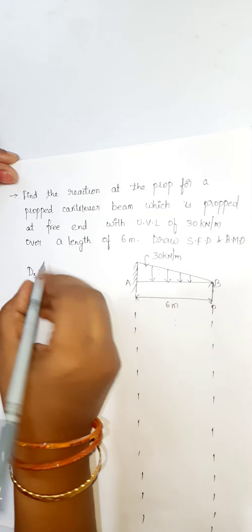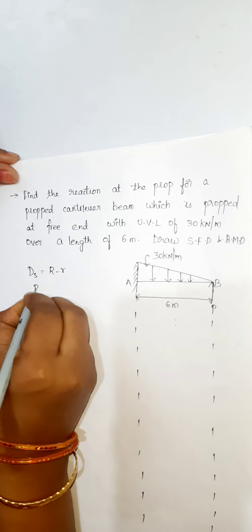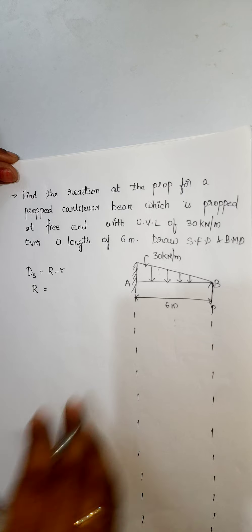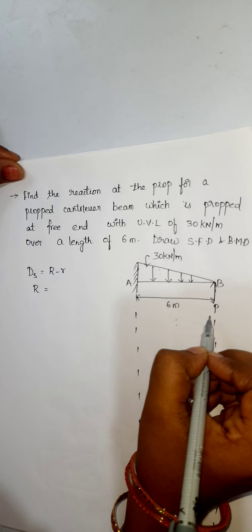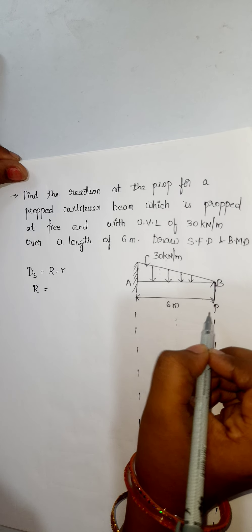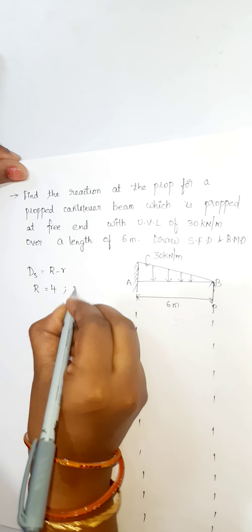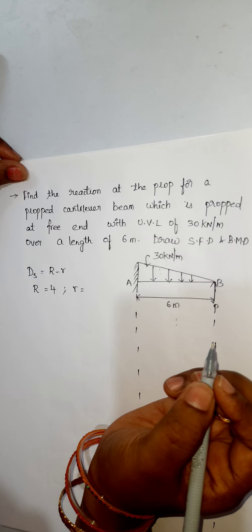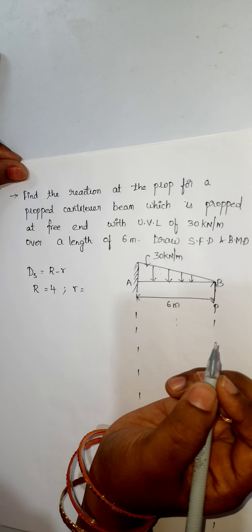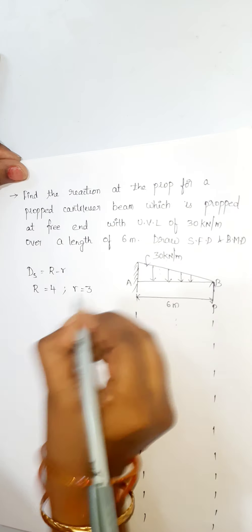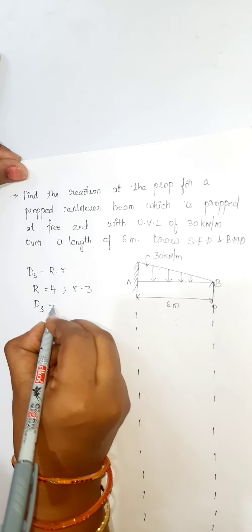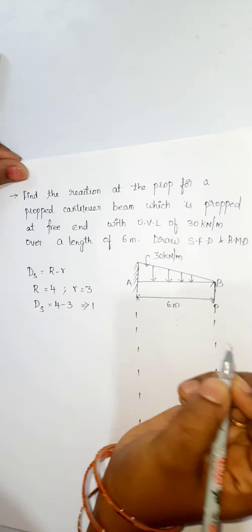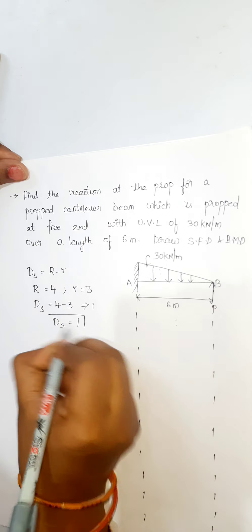I should calculate DS, the degree of static indeterminacy, equal to capital R minus small r. Capital R is the number of unknowns. For the fixed end, R equals 3. The prop gives a vertical reaction, so R equals 1. Total capital R is 3 plus 1 equals 4. Small r equals the number of static equilibrium conditions: horizontal force, vertical force, and moment — so small r equals 3. Therefore DS equals 4 minus 3 equals 1. This problem has degree of indeterminacy 1.